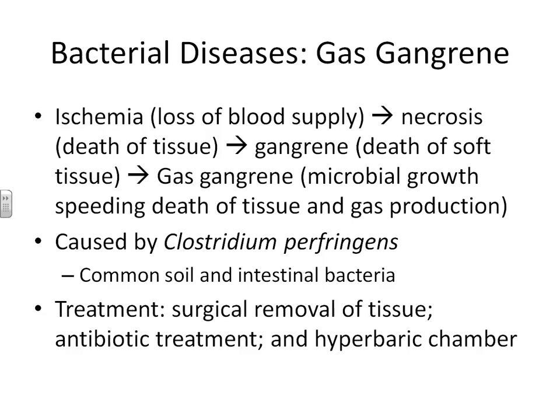Our next bacterial disease is gas gangrene. You have to have a progression of things happen for someone to get gas gangrene. The first thing that has to happen is ischemia — the loss of blood supply to a particular area of the body. This has absolutely nothing to do with bacteria. Often people that are diabetic will have loss of blood supply to a particular area. Once you get loss of blood supply, you no longer have oxygen flow to the area, so you end up with necrosis, which is death of the tissue in that area.